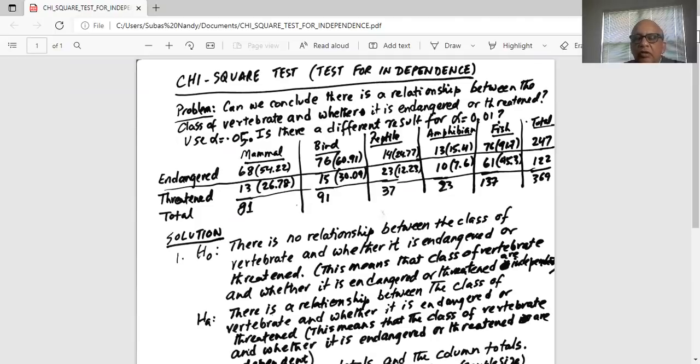This is a contingency table. We have categorized animals into two categories. First, whether they're mammal, bird, reptile, amphibian, or fish. That's five categories of animals along the vertical columns. We have further categorized each animal into whether they're endangered class or threatened class. Endangered class is in the first row, threatened class in the second row.